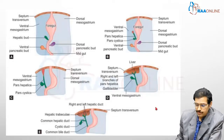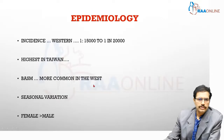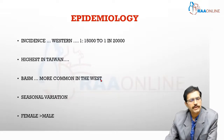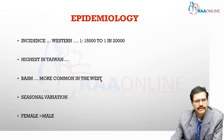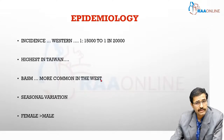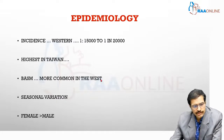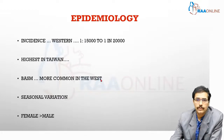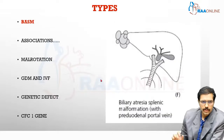This embryological development of the biliary tree is complete by around four to six weeks of gestation — approximately 30 to 35 days. Regarding epidemiology, the incidence of biliary atresia varies between western and eastern populations: one in 15,000 to one in 20,000 in the western population, whereas it is more common among Asians, particularly Southeast Asians. The highest incidence is noted in Taiwan. There also appears to be a seasonal variation, with biliary atresia being more common during winter and rainy seasons, and females tend to be more affected than males.